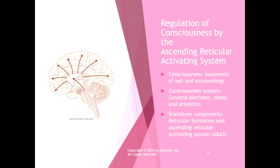The part of the reticular formation that regulates consciousness is called the Ascending Reticular Activating System, or ARAS. Consciousness is our awareness of self and surroundings, and this system governs alertness, sleep, and attention. This is what gets activated when incoming nociceptive data keeps us awake at night — a painful knee or shoulder keeps us awake and alert because the system signals that something is wrong, which often just makes patients grumpy when they come into PT complaining they can't sleep.